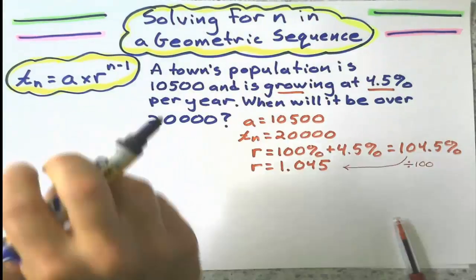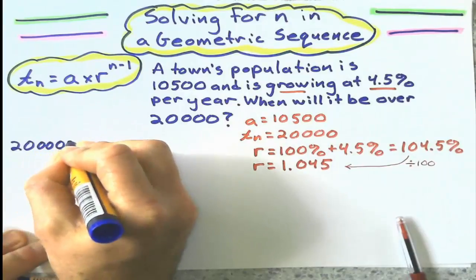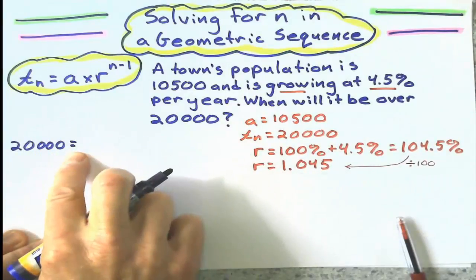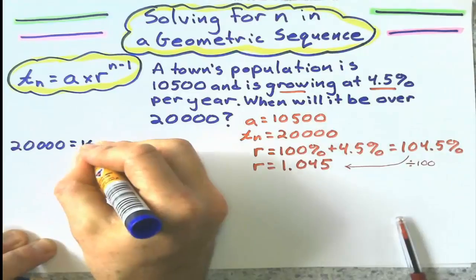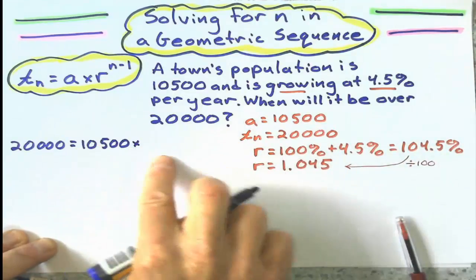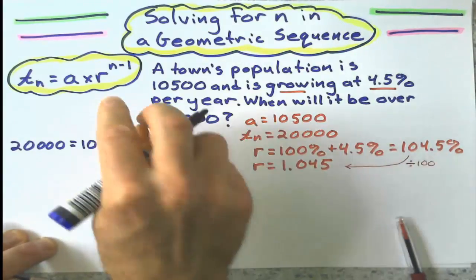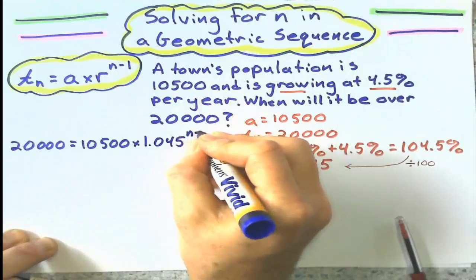And we've got 20,000 here. The first term is 10,500. 10,500 times my common ratio is 1.045. 1.045. And I have to get that pesky n minus 1 up there.